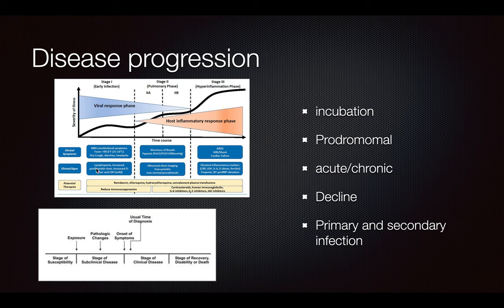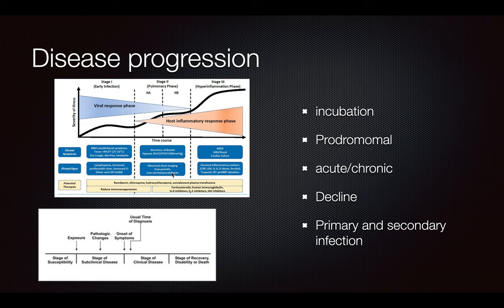The signs would be the proliferation of the white blood cells, increased prothrombin time, so increased amount of platelets, and decreased D-dimer and LDH. The pulmonary stage is going to be shortness of breath and hypoxia from the coughing. There is going to be abnormal chest imaging — it could be cloudiness of the lungs, looking like ground glass, or it can be opaque. There is transaminitis, with amines in the lungs, and low to normal procalcitonin.